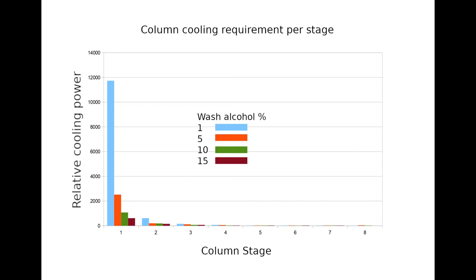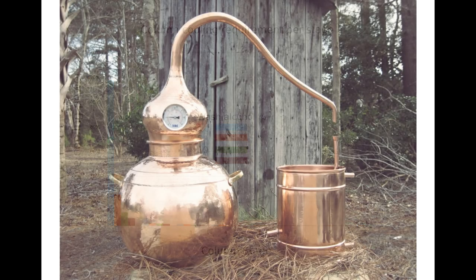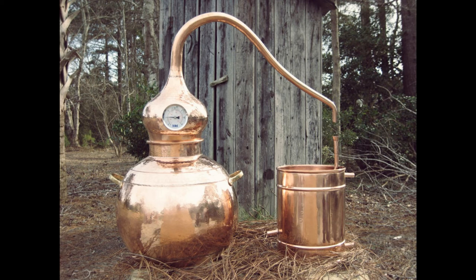If you are new to distillation and do not yet have a still, I suggest going straight to a continuous process if vodka is your goal, because it has several advantages including potentially lower cost. With batch distillation, as the batch progresses the alcohol content of the liquid in the boiler falls, and maintaining a constant alcohol vapour flow rate requires increasing the boiler power. You simply use a powerful heater and a controller that allows the power to be varied over a wide range, but all that heat is released from vapour when it condenses in the distillation column.